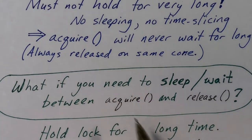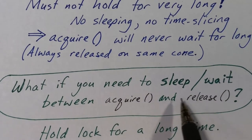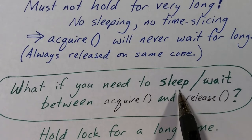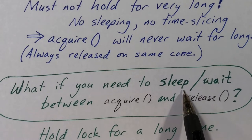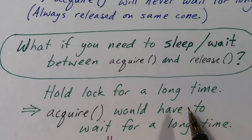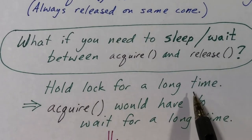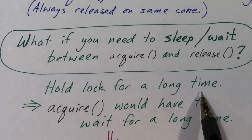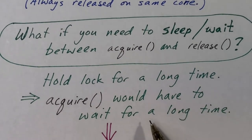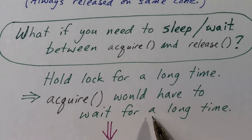The problem is: what if you need to wait for a long time between acquiring a lock and releasing it? In particular, what if you need to execute the sleep function and suspend the execution of the process between the acquire and the corresponding release? If you were to hold the lock for a very long time, the acquire would have to loop in its tight loop waiting for the lock to be released, which would essentially tie up the core. So this is just not going to work.